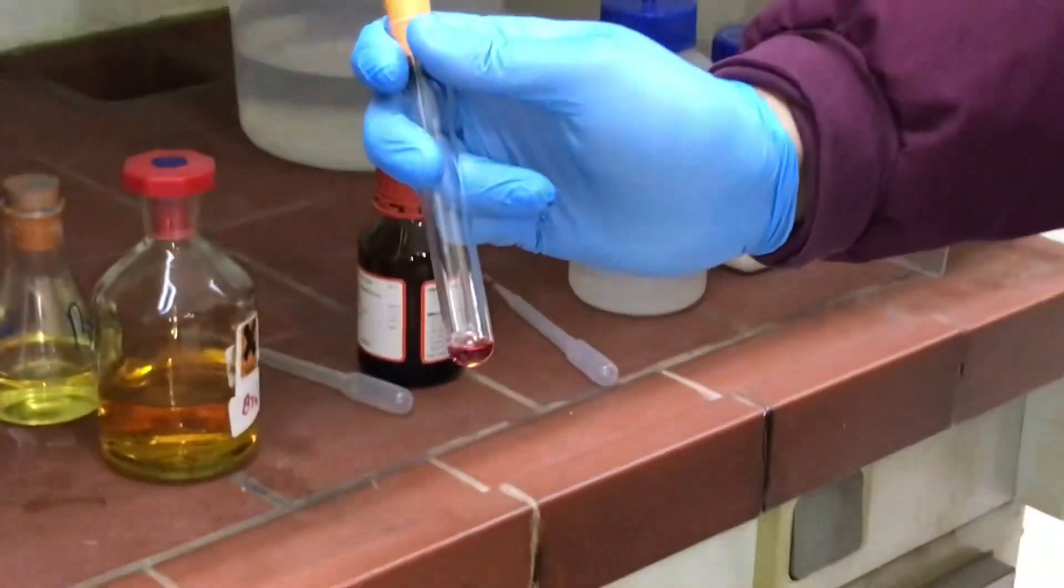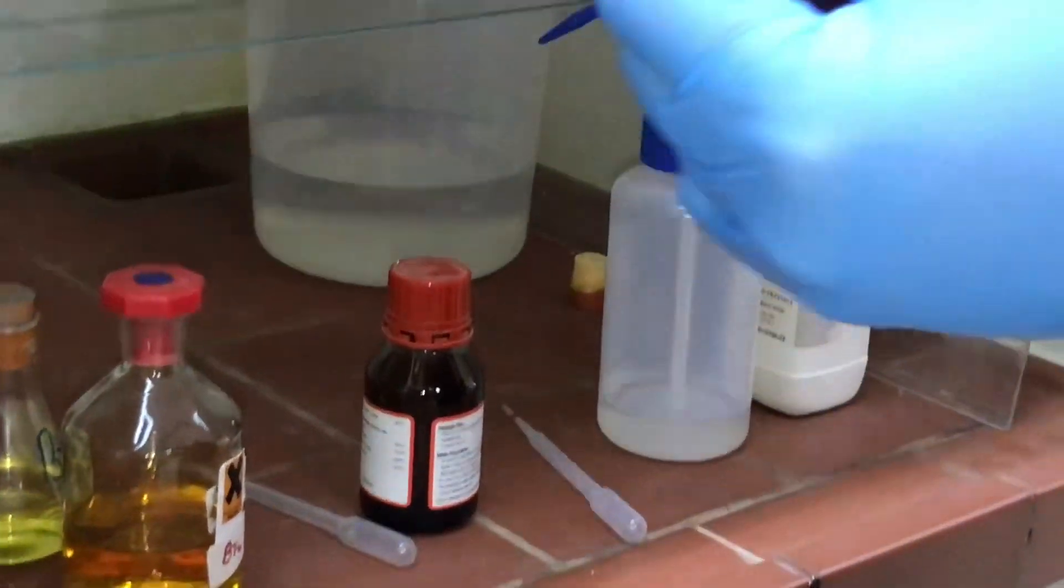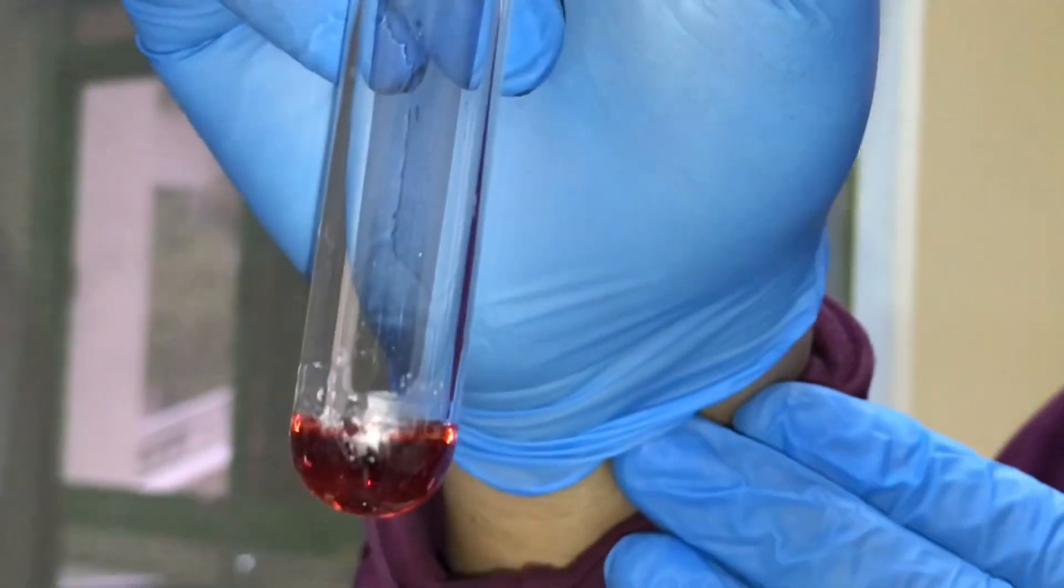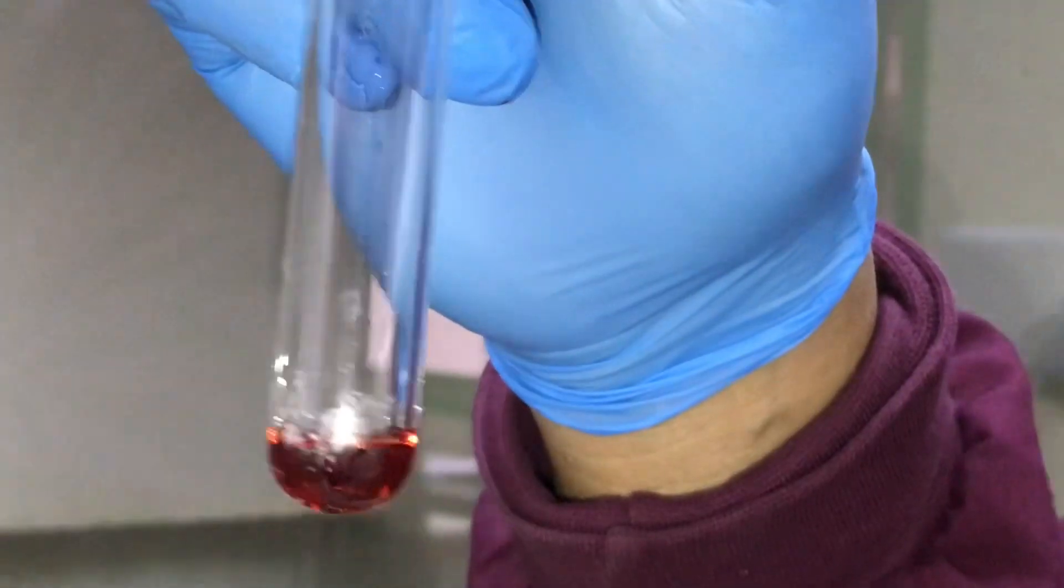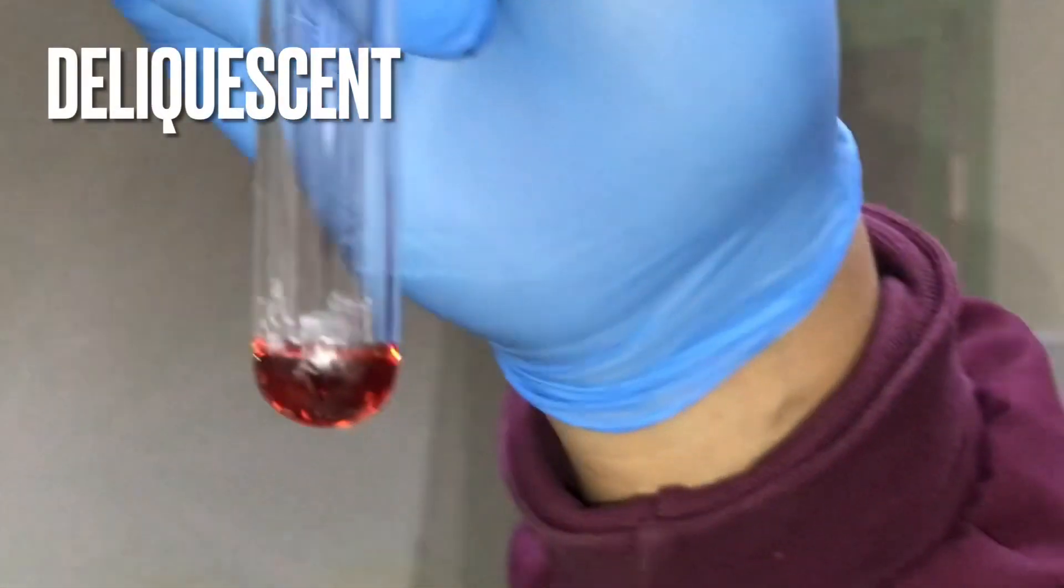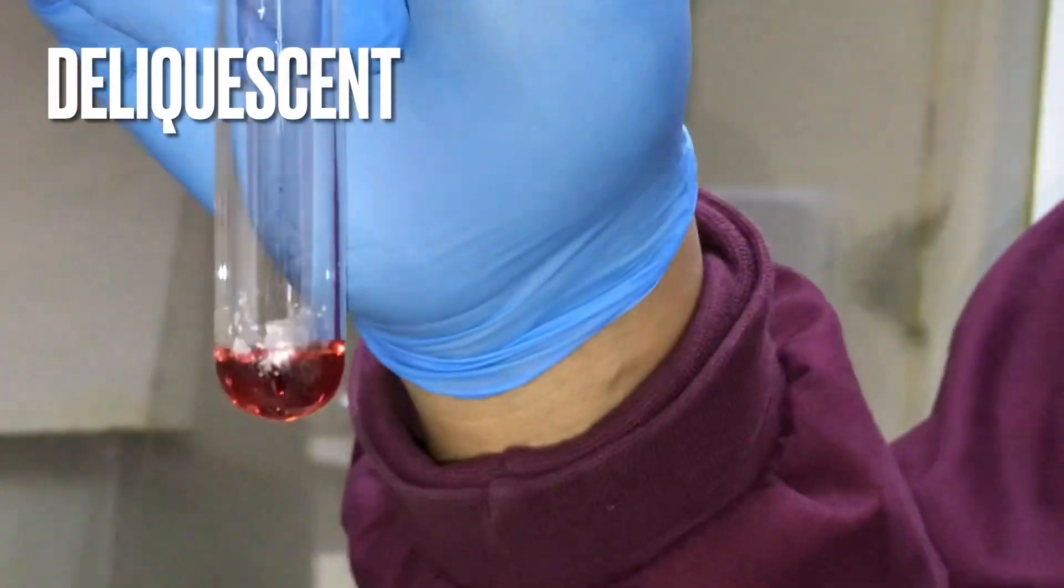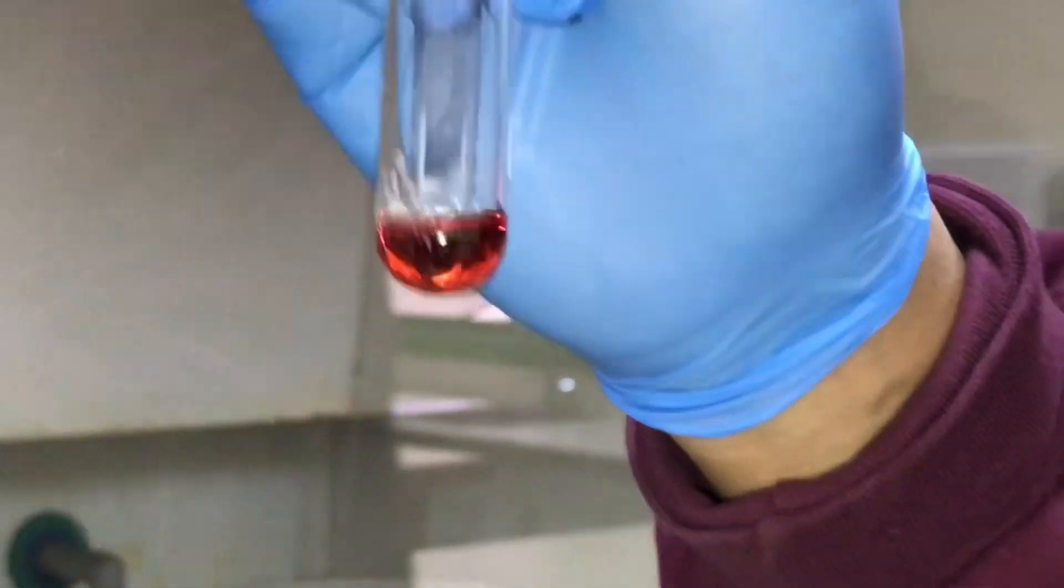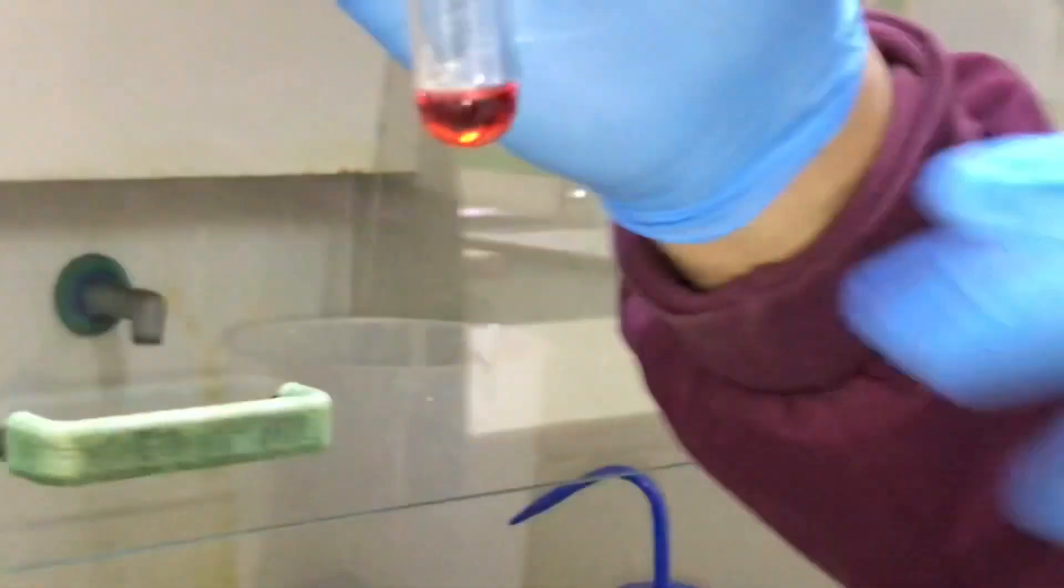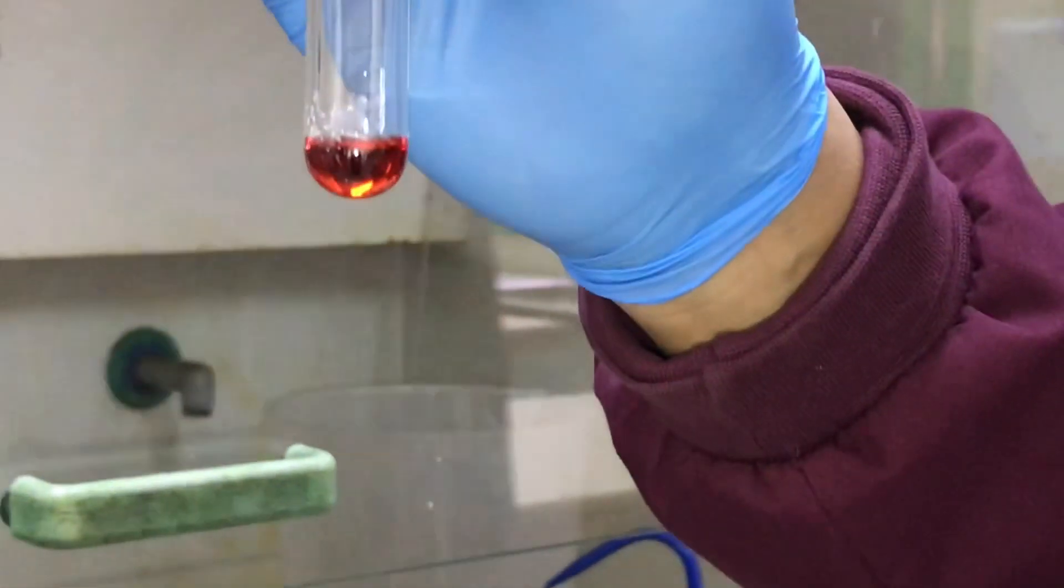We call it hygroscopic and also deliquescent. It's hygroscopic because it absorbs water from the atmosphere, but it's deliquescent because it turns into a liquid once it does that. This is from a saturated sample, so the concentration is about 0.8 moles per decimeter cubed.